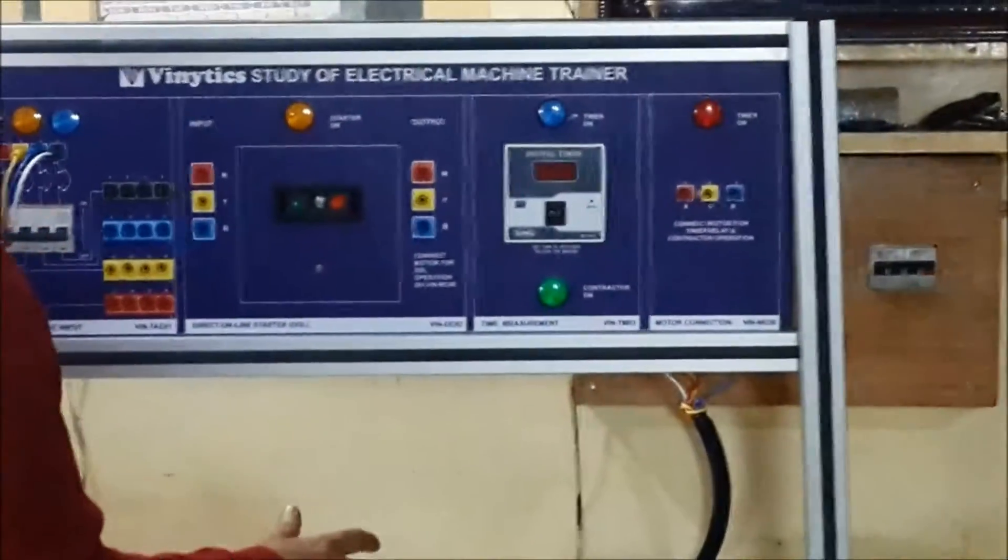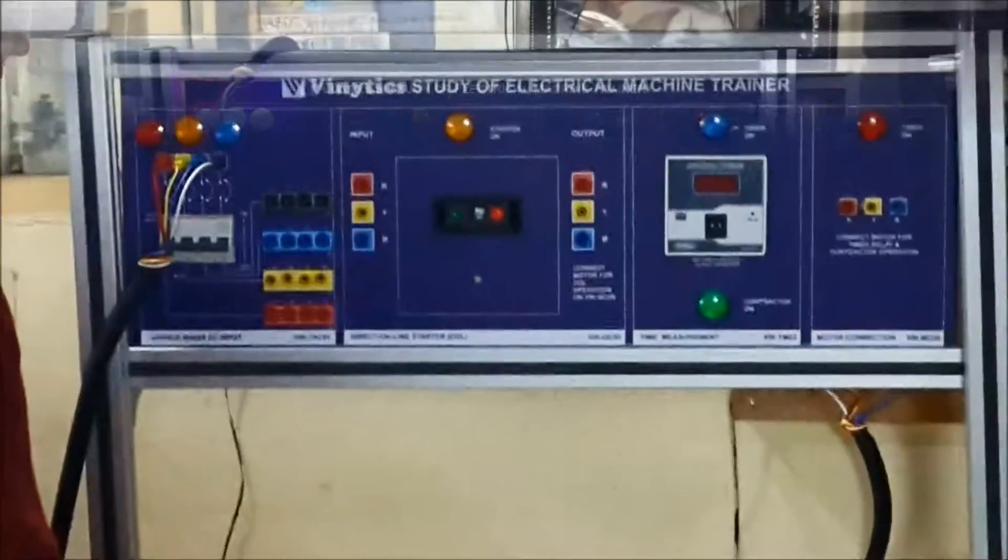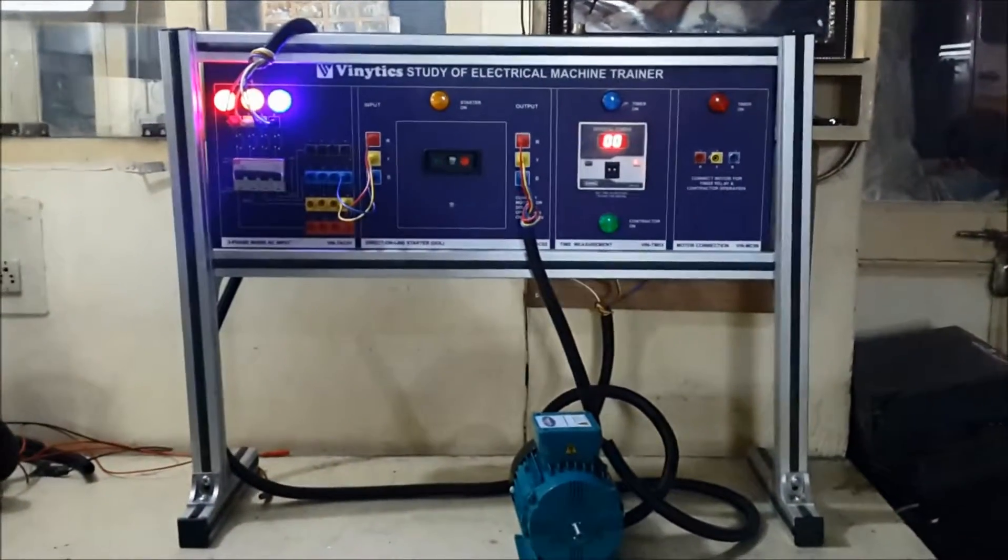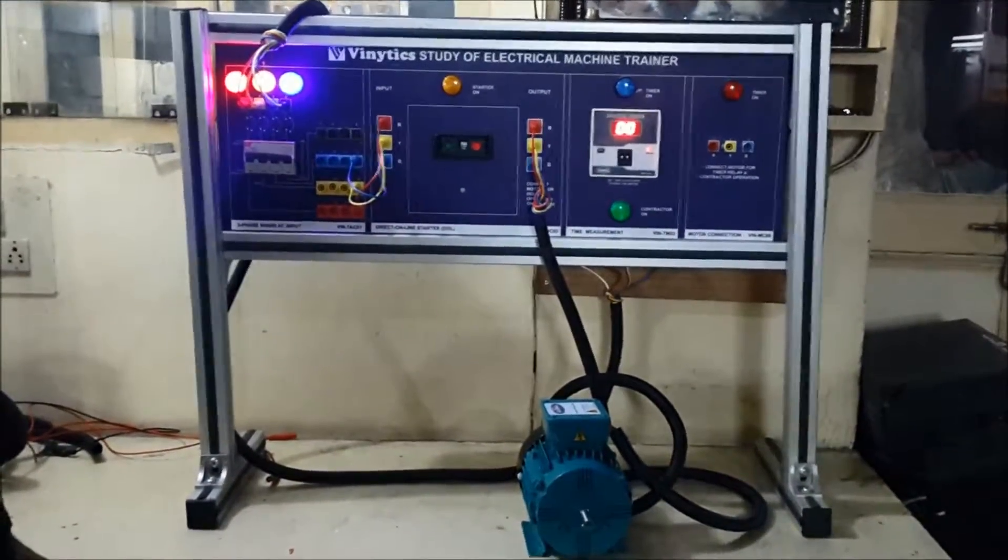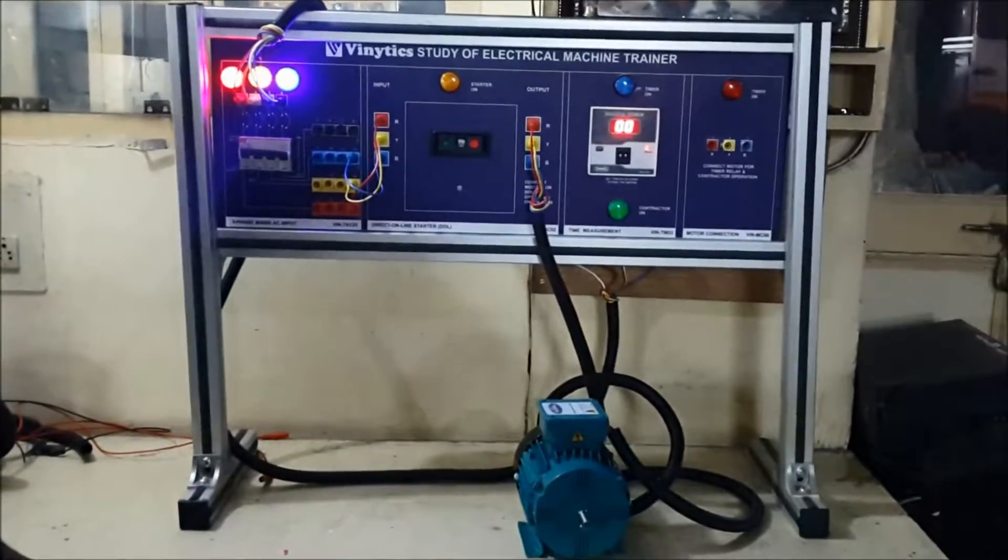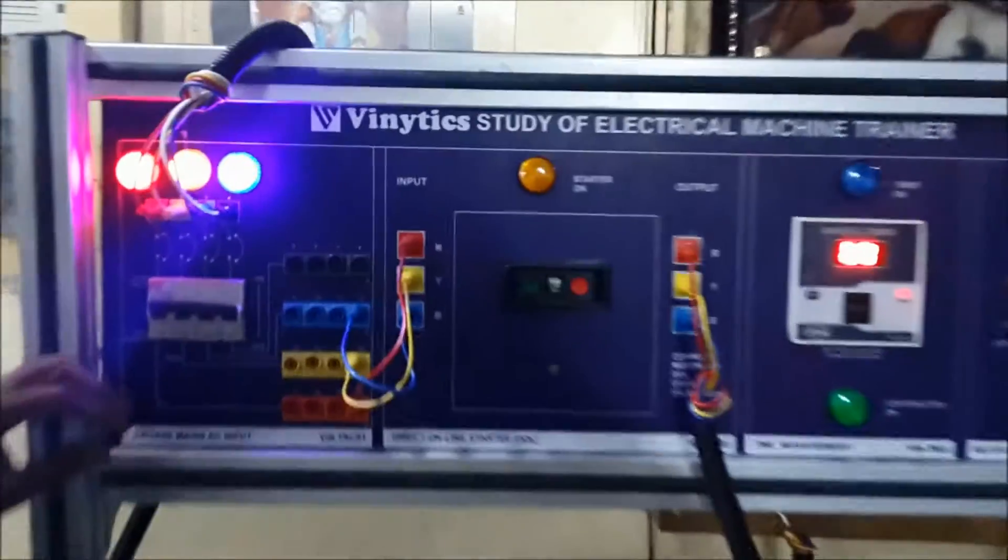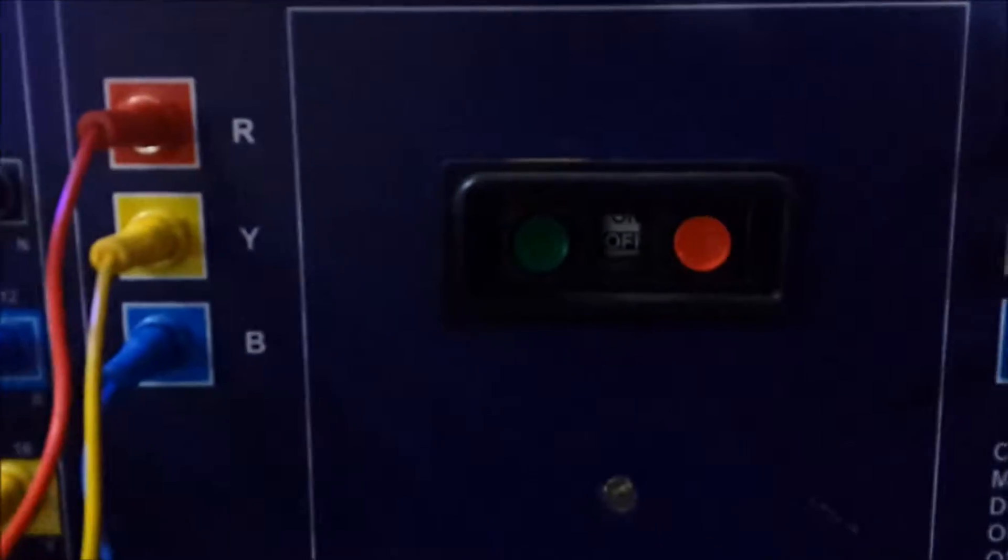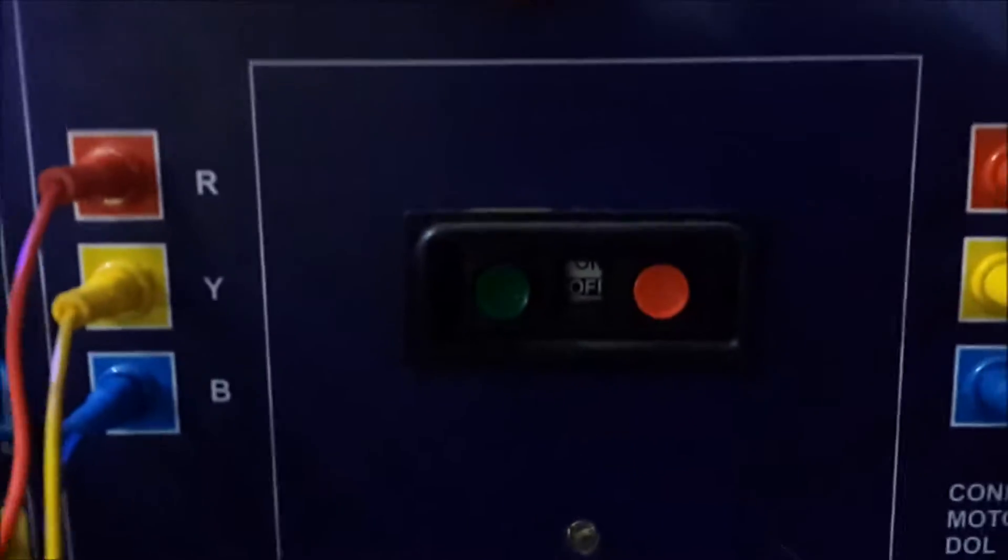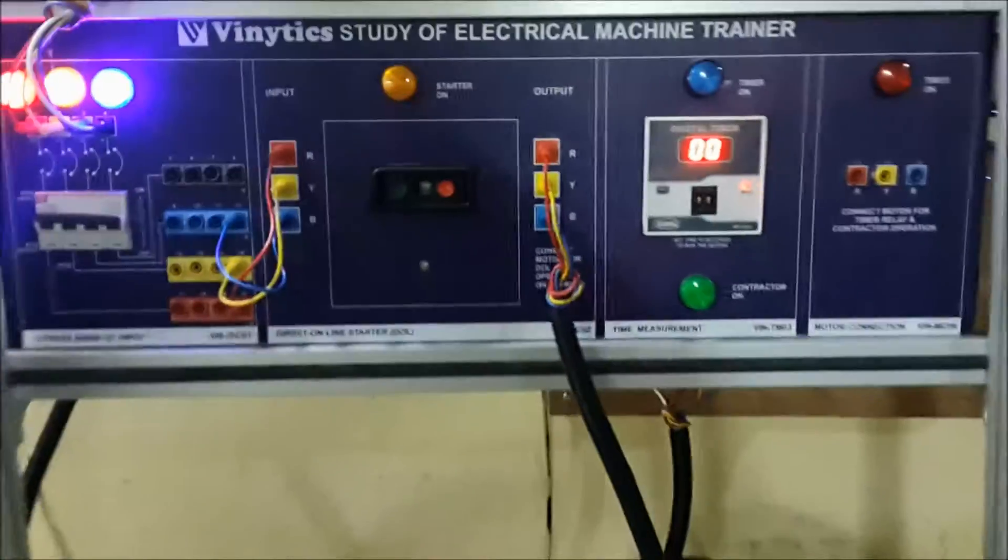First of all, we have to switch on the three-phase MCB. As you can see on the DOL starter, it is marked as off. To switch on the DOL starter, you have to push the green button.